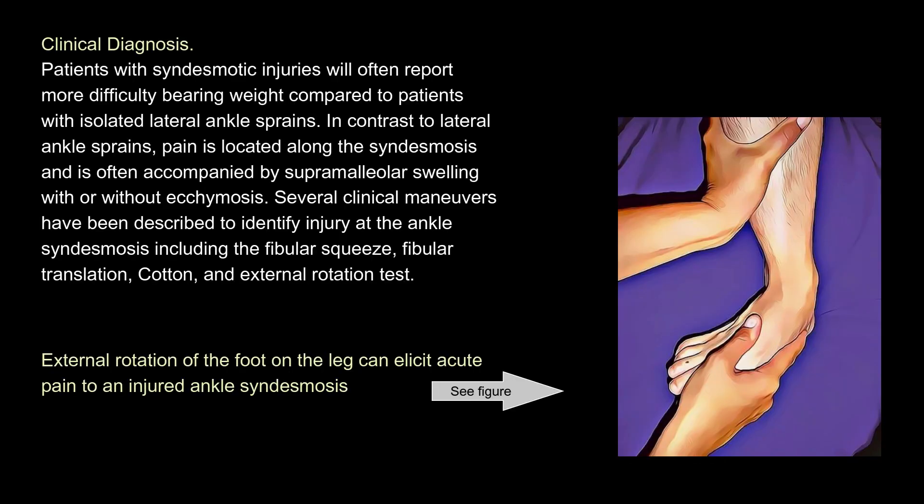Clinical diagnosis: Patients with syndesmotic injuries will often report more difficulty bearing weight compared to patients with isolated lateral ankle sprains. In contrast to lateral ankle sprains, pain is located along the syndesmosis and is often accompanied by supramalleolar swelling with or without ecchymosis. Several clinical maneuvers have been described to identify injury at the ankle syndesmosis, including the fibular squeeze, fibular translation, cotton, and external rotation test.